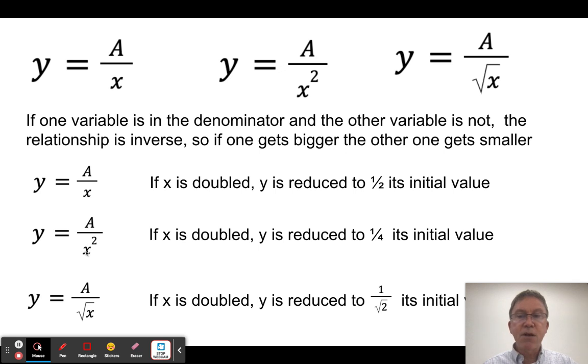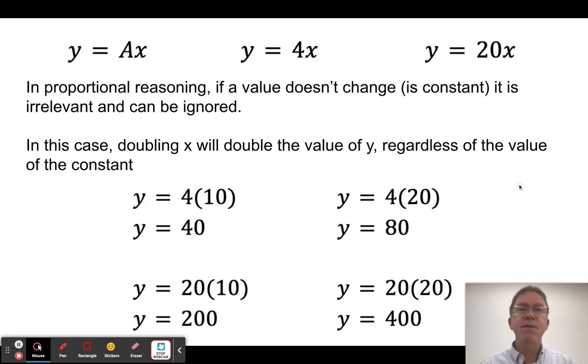In this case, if it's y equals A over x squared, if I double x, then two squared is four, so this is going to be one-fourth of its initial value. And if it's y equals A over root x, then if I double x, then y is going to be reduced to one over root two of what its original value is.